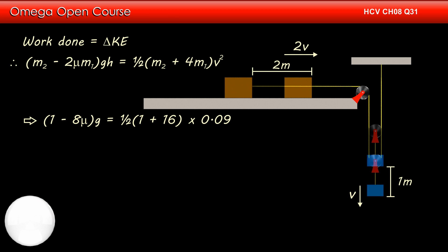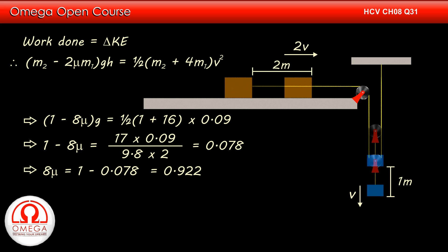Putting the values, we get 1 minus 8 mu is equal to half into 1 plus 16 into 0.09 which implies 1 minus 8 mu is equal to 17 into 0.09 divided by 9.8 into 2 or 0.078. This implies 8 mu is equal to 1 minus 0.078 or 0.922. Hence, mu is equal to 0.922 divided by 8 or 0.115.